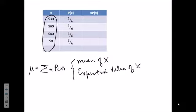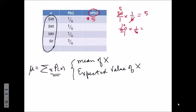Let's see how we calculate. We're going to need to calculate x·p(x). Here's x·p(x), that means x times p(x). 30 times one-sixth, we can cancel, and that's 5. So this would be $5. 60 times one-sixth, cancel, that's $10.